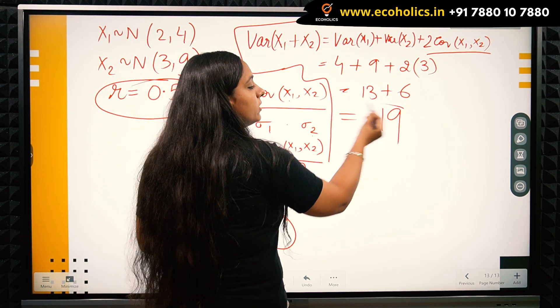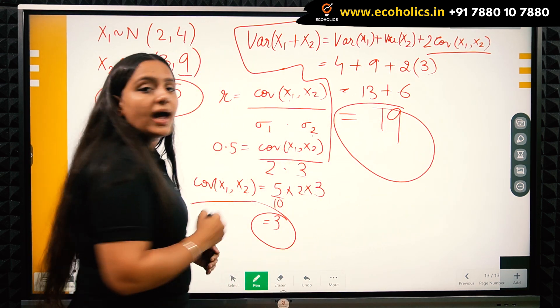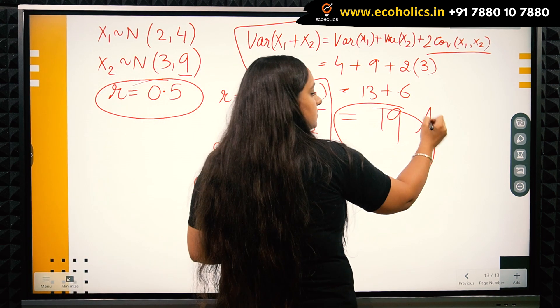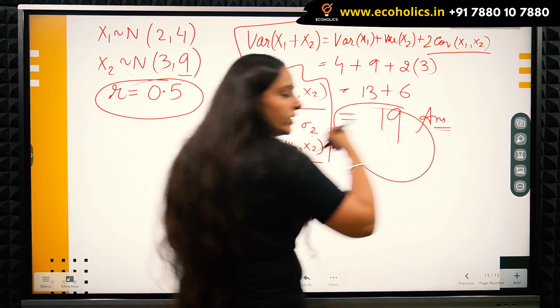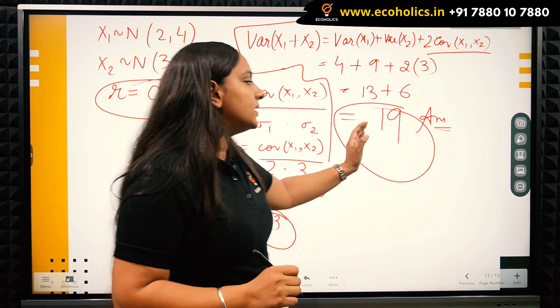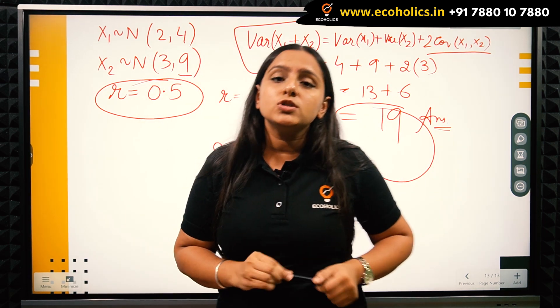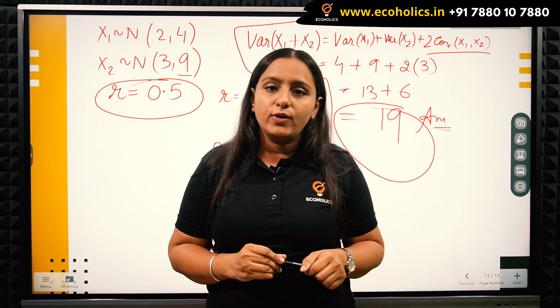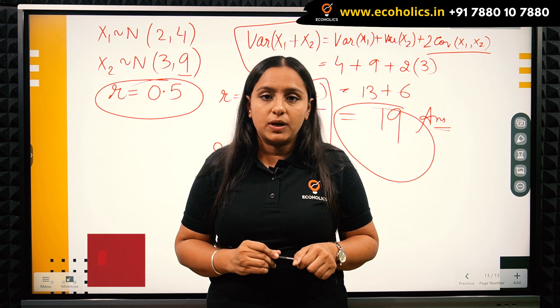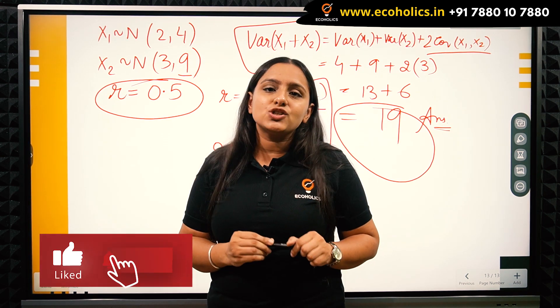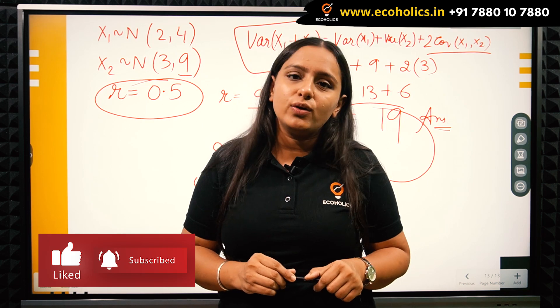We have got the variance of X1 plus X2 as 19, and that's the answer. It's not an MCQ question, you have to give the answer. The answer is 19. This was the solution to question number 47 of IIT JAM economics paper. Please like, share, and subscribe to the channel. Thank you everyone.